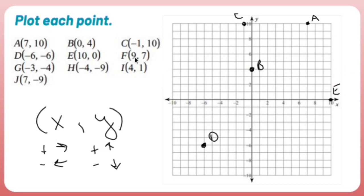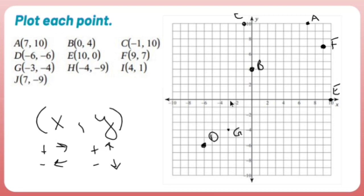F is (9, 7): go right 9, up 7 — that's F. G is (-3, -4): go left 3, down 4 — that's G. H is (-4, -9): go left 4, down 9 — that's H. I is (4, 1): go right 4, up 1 — that's I. And J is (7, -9): go right 7, down 9 — that's J.